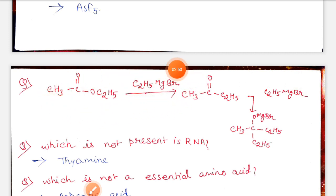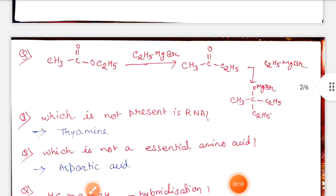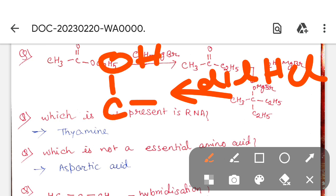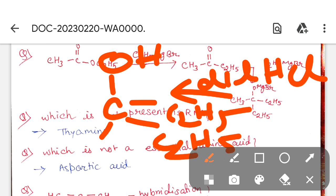Next, if Grignard reagent is introduced to this - this is an ester - so here tertiary alcohol is formed. You can write dilute HCl. Dilute HCl and tertiary alcohol is given. C2H5, C2H5, and CH3 - this is the structure of the answer.